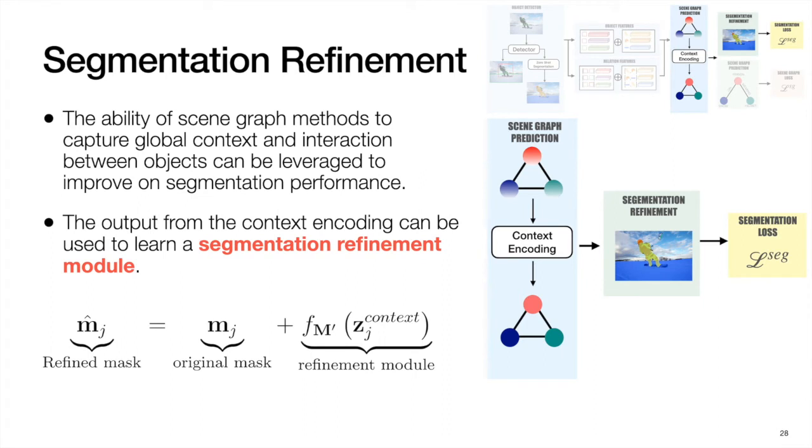Finally, as scene graph methods aim to effectively capture object interactions, the representation they learn can be leveraged to improve segmentation performance. To this end, we define a segmentation refinement module which learns a residual over the segmentation masks generated by the zero-shot transfer mechanism.